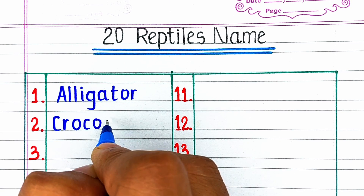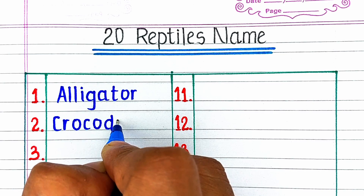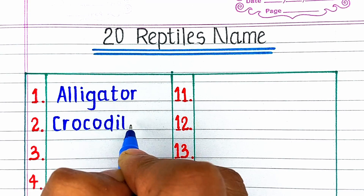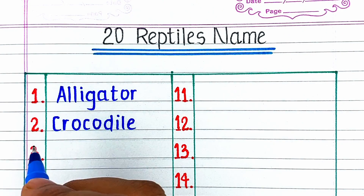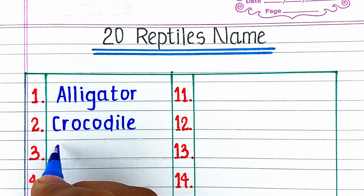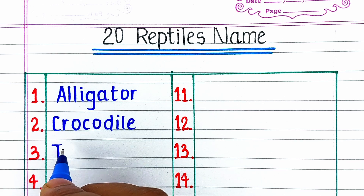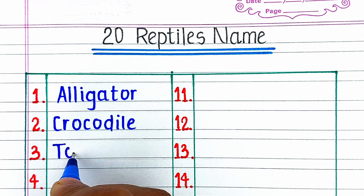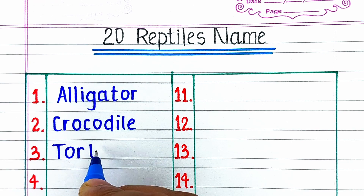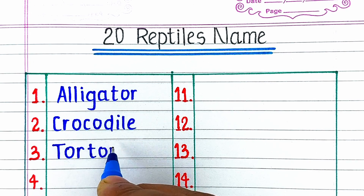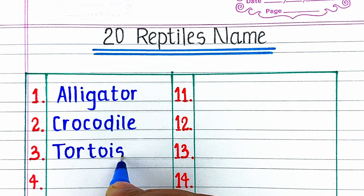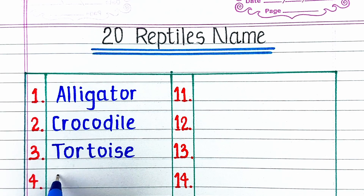Next is C-R-O-C-O-D-I-L-E, crocodile. On number three we have T-O-R-T-O-I-S-E, tortoise.